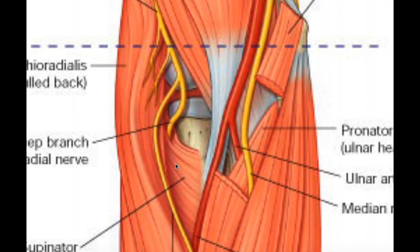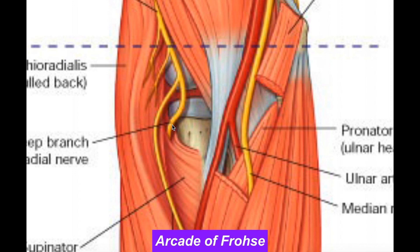Within the supinator there's a little slit — kind of a hole — and it turns out the deep radial nerve can actually enter through that hole. When it enters into this hole, it enters into basically a tunnel. The tunnel itself is called the supinator tunnel, because it goes through the supinator muscle. The opening to that supinator tunnel is referred to as the arcade of Frosch. So the deep branch of the radial nerve enters past the arcade of Frosch into the supinator tunnel.